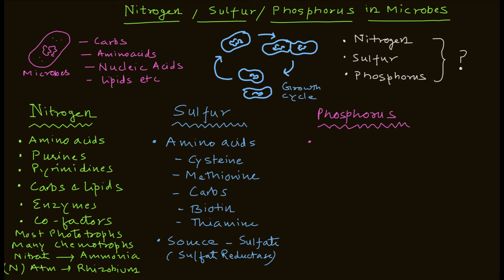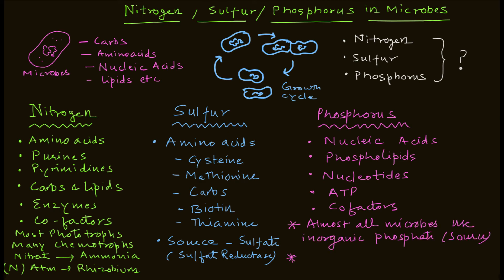Now further, phosphorus. This is the third compound that we are discussing. It's important for nucleic acids, it is important for phospholipids, its main constituents for nucleotides, and then you have ATP molecule with phosphate group which is most important. Many cofactors they are also dependent on phosphorus. And almost all microbes they use inorganic phosphate.